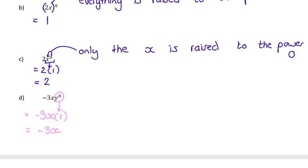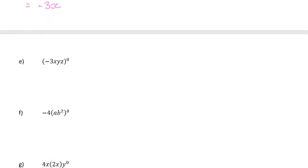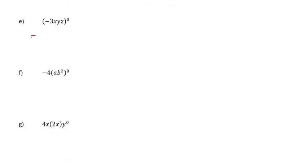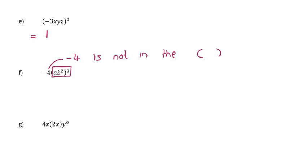Just be very careful: if there's a bracket, the whole thing is raised to the power of 0, and then the whole thing can disappear. So for example in e, the whole bracket is raised to the power of 0, so the entire bracket disappears to 1. In f, only the bracket is raised to the power of 0, so the negative 4 is not in the bracket and therefore not affected by the power of 0. The negative 4 has to stay, and the entire bracket disappears to 1. So I get negative 4 times 1, which is negative 4.